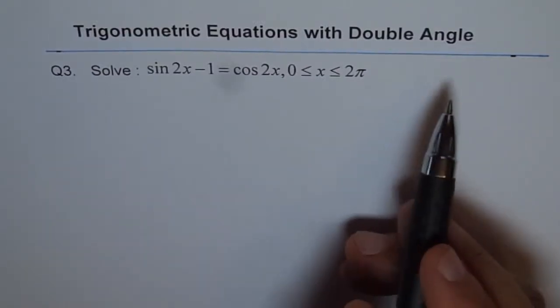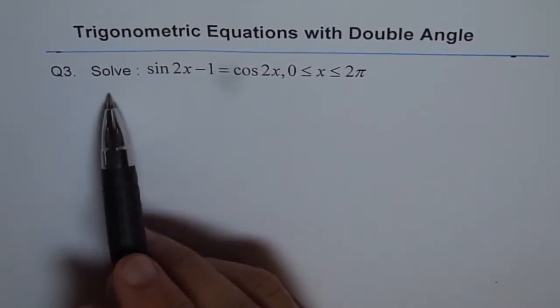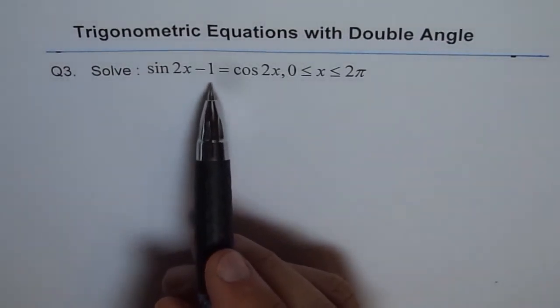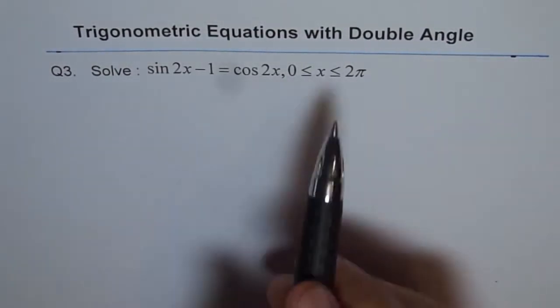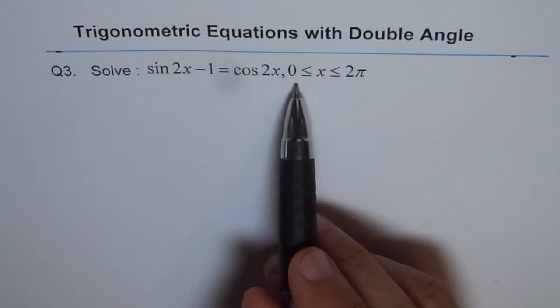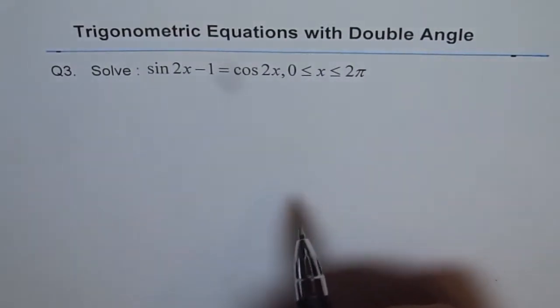Trigonometric equations with double angle. Question 3. Solve sine 2x minus 1 equals cos 2x, where x is greater than or equal to 0 and less than or equal to 2π.